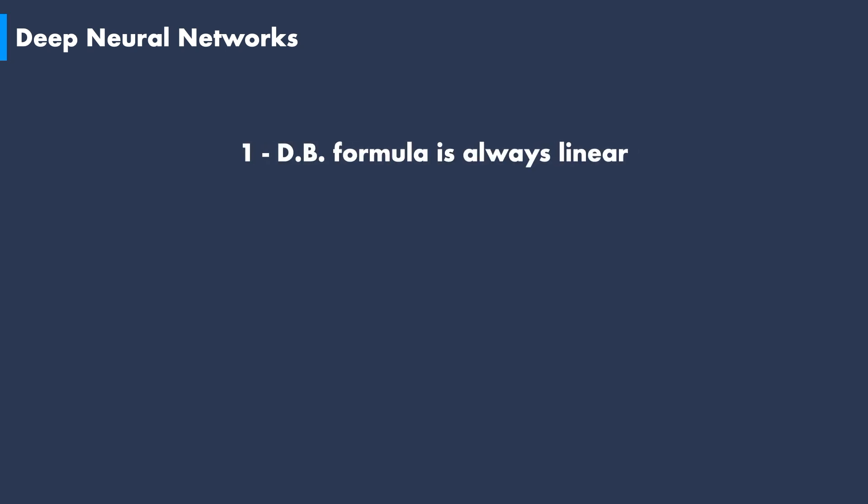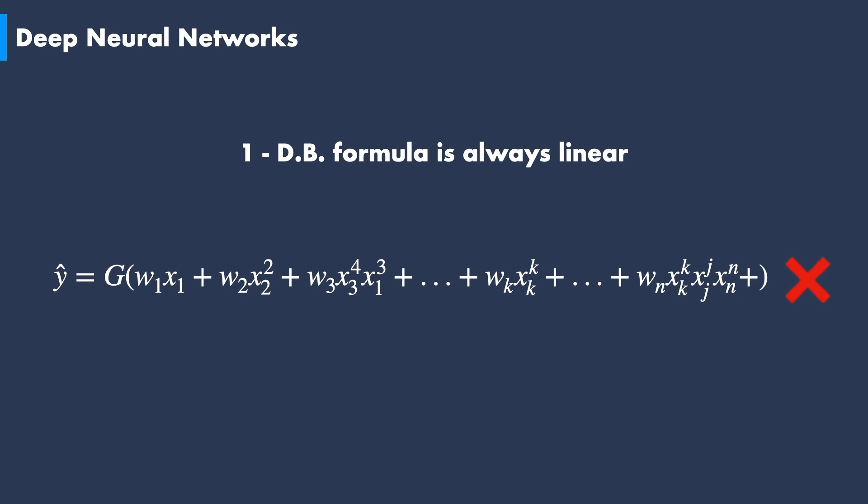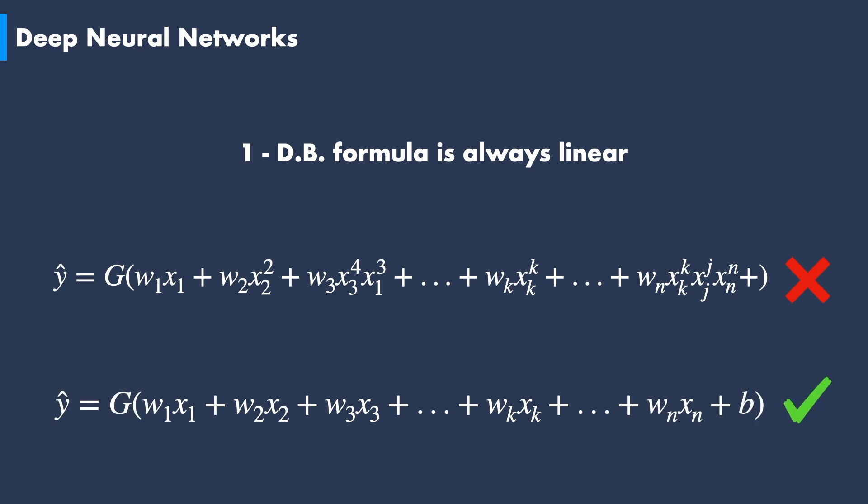The first principle states that the decision boundary formula is always linear. This is very counter-intuitive, as decision boundaries of complex classification problems are not at all linear, but this will become clearer when talking about the rest of the principles. A direct consequence of this linearity principle is that we no longer consider non-linear terms in the formula of the decision boundary. Rather, we express the hypothesis as a simple linear sum of weighted variables. Surprisingly, this looks very similar to the hypothesis of binary classification problems with linear decision boundaries — but the answer to why brings us to the second principle.